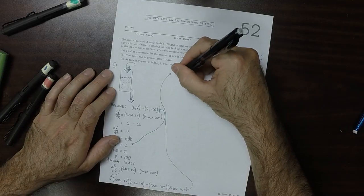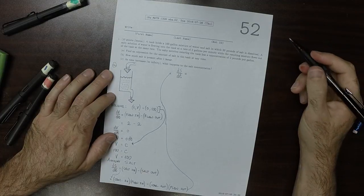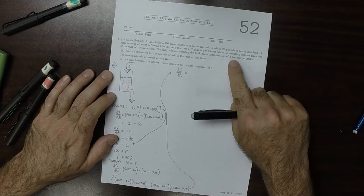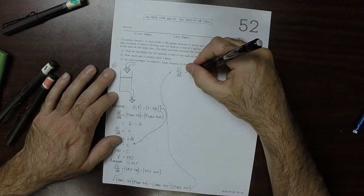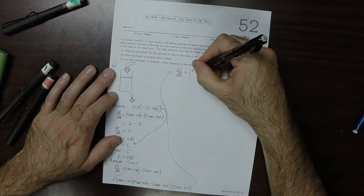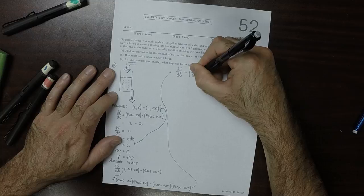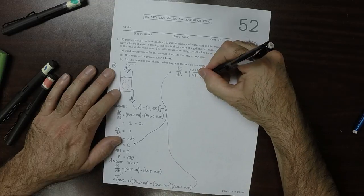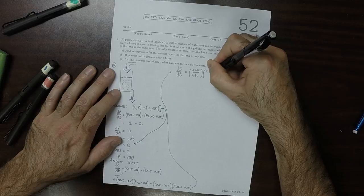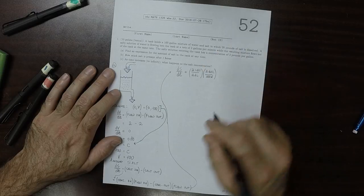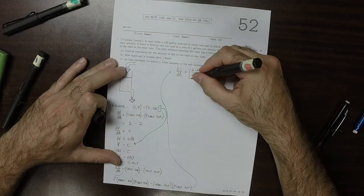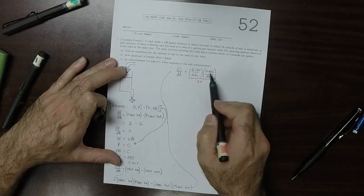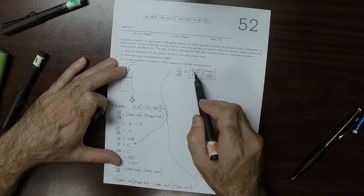So dealing with that, dS/dt, the concentration coming in is 2 pounds per gallon. And then the flow rate in is 2 gallons per minute. So what's coming in, if you cancel the units, the gallons cancel. What's coming in is 4, 2 times 2 is 4 pounds per minute.